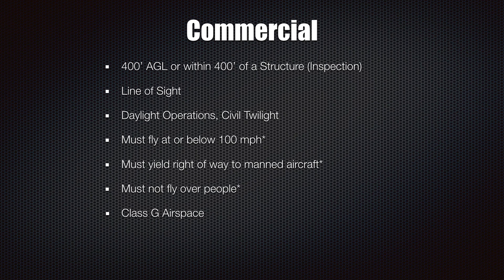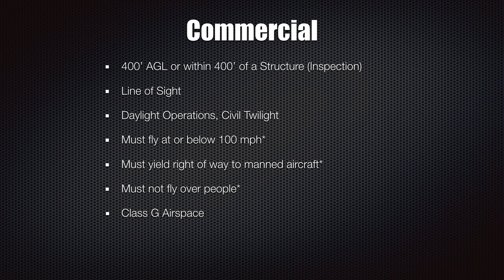Other Part 107 rules include: line of sight, daylight operations or civil twilight — which is 30 minutes before sunrise and after sunset — flying at or below 100 miles per hour, yielding right of way to manned aircraft at all times, and not flying over people. You must fly in Class G, or Class Golf, airspace. With recreational use, the five-mile rule applies, but with commercial use that rule goes away and you're flying in a category of airspace like Class G. Class G is uncontrolled airspace, and we'll go over in a future video how to know if you're in Class G airspace.